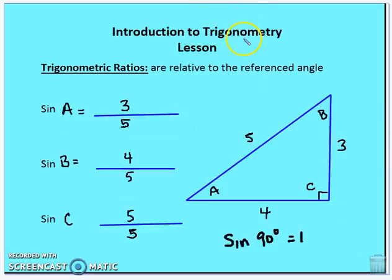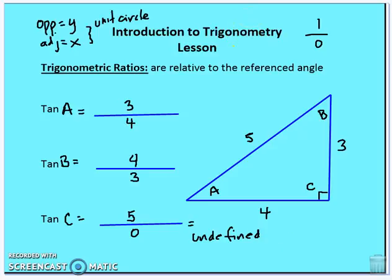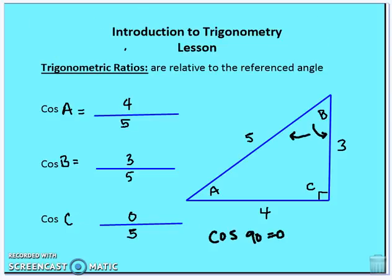Let's see how that plays out for angles A, B, and C. Sine of A is 3/5, sine of B is 4/5, sine of C is 5/5. Tangent of A is 3/4, tangent of B is 4/3, tangent of C is 5/0 — undefined. Cosine of A is 4/5, cosine of B is 3/5, cosine of C is 0/5. The value of any trig function depends on the angle in question — cosine of A will differ from cosine of B when their angle measures differ.